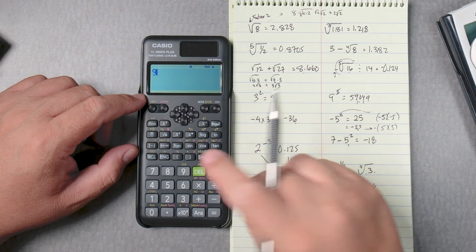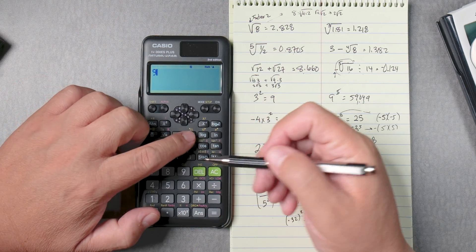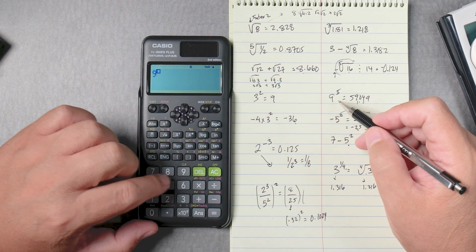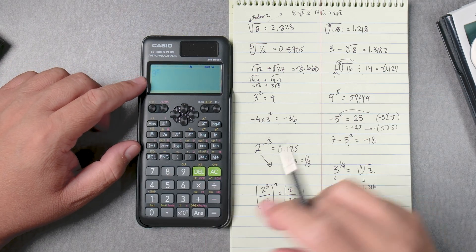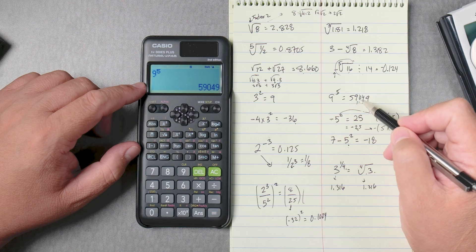How about the next one? 9 to the, so this is the X to the box. We're going to finally use it, and then we put the power of 5 equals 59049.